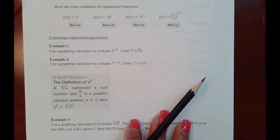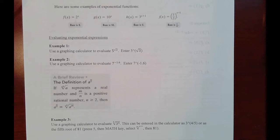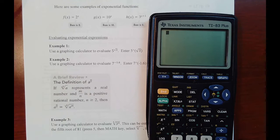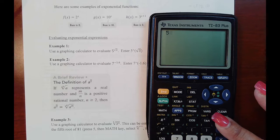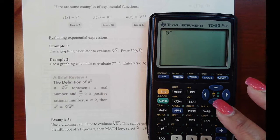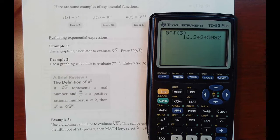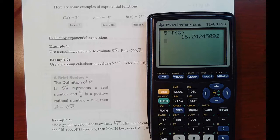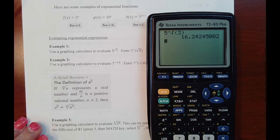Examples one and two represent evaluating exponential functions using your calculator. Make sure you're able to enter these in your calculator. The first one is 5 — use the power key found right under the clear button — raised to the power of square root of 3. The second function, call up the square root symbol, and we have 16.24. When rounding, that will be indicated in the software. Let's round to the hundredths place for examples one and two.